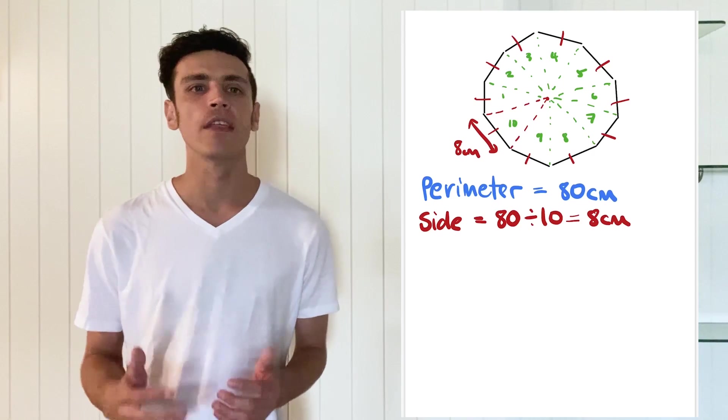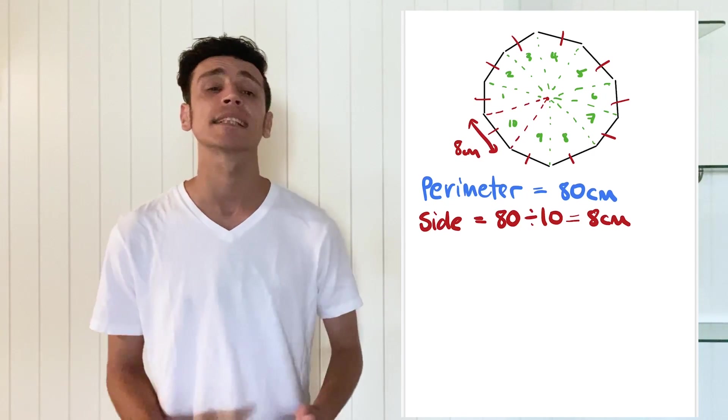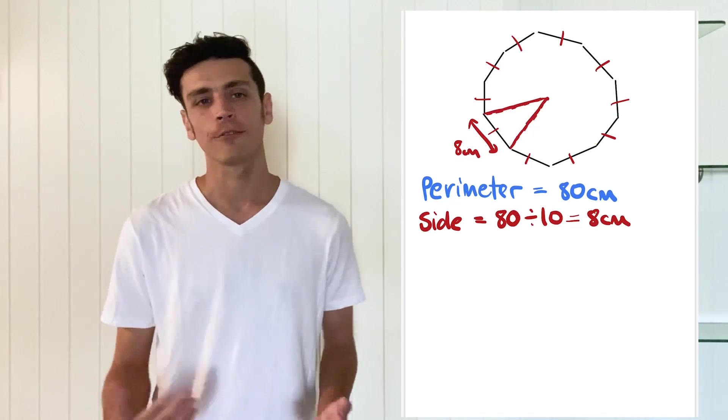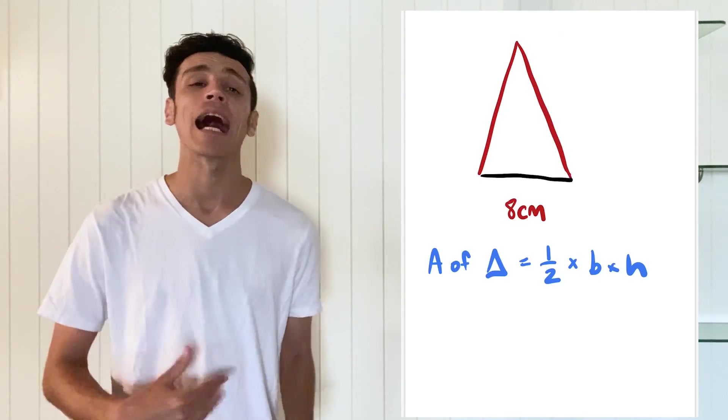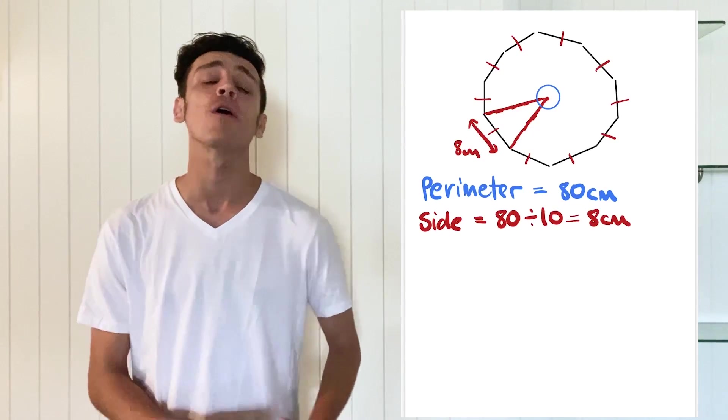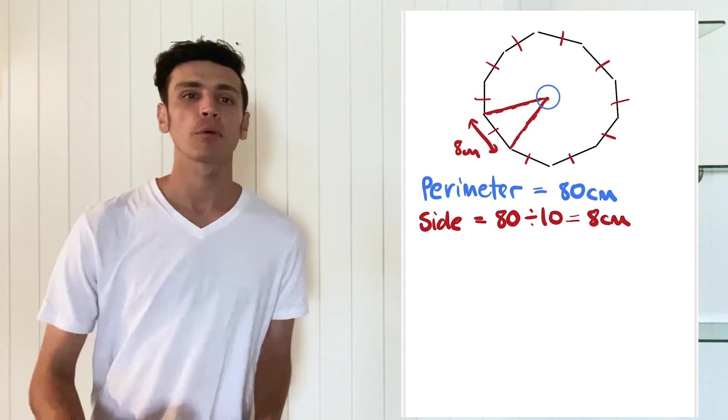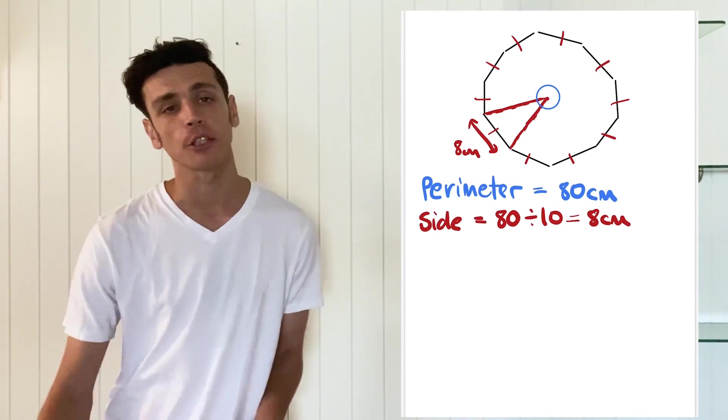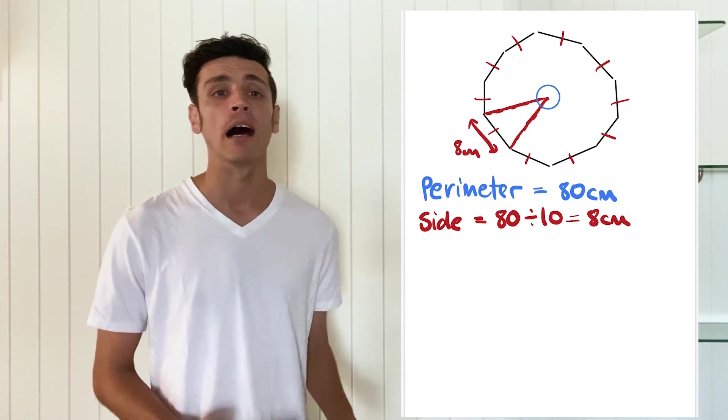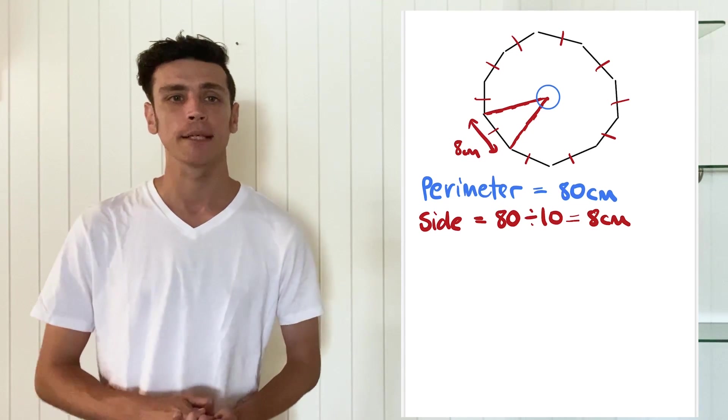So we can see there that the triangle has a base of 8 centimeters. Now our formula for finding the area of a triangle is half of a base times height. Well we have our base but we don't have the height, so we're going to have to use a little bit of geometry in order to solve it.